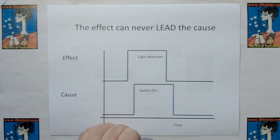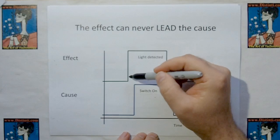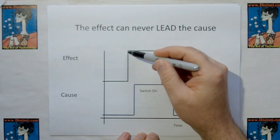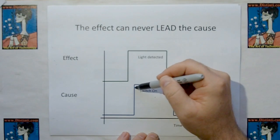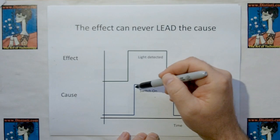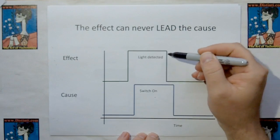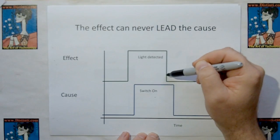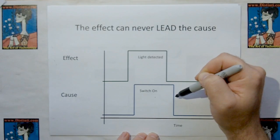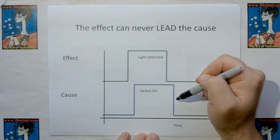The effect can never lead the cause. In other words, you cannot have a condition where the sensor detects a light on the wall before the switch is turned on. This is a violation of the laws of physics. And likewise, you can't see the light go away before the switch is turned off, unless of course there's a malfunction, but we're not talking about malfunctions here.